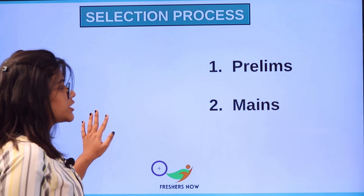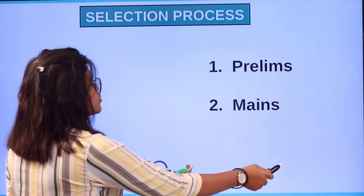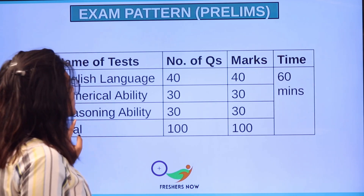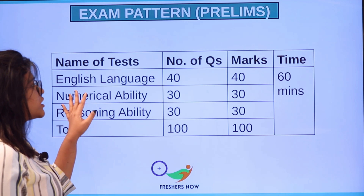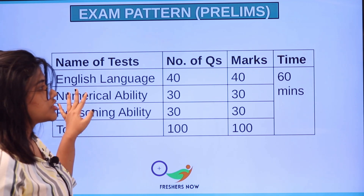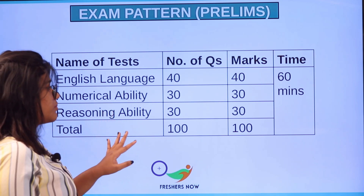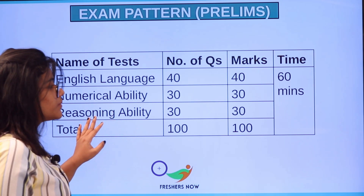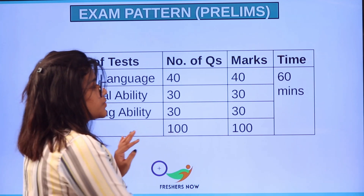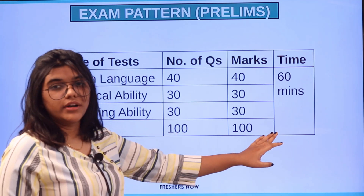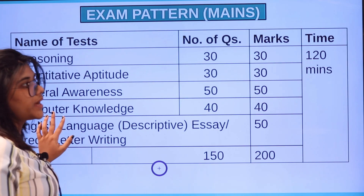The selection process consists of Prelims and Mains. The Prelims exam pattern has three sections: English Language with 40 questions and 40 marks, Numerical Ability with 30 questions and 30 marks, and Reasoning Ability with 30 questions and 30 marks. In total, there are 100 questions for 100 marks with a time limit of 60 minutes.